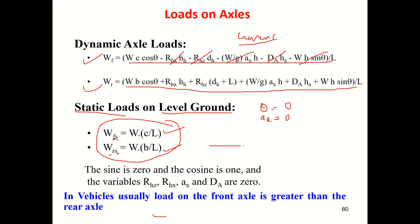So if this is the vehicle, we call the front static load Wfs and the rear static load Wrs. The total weight is W, the distance from front axle to CG is B, and from rear axle to CG is C.